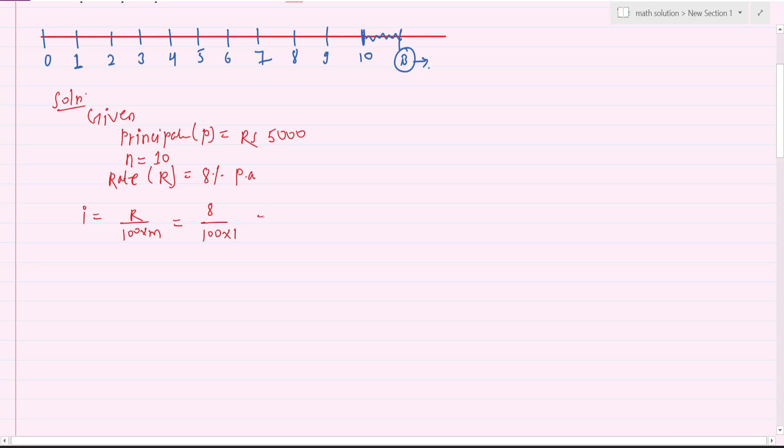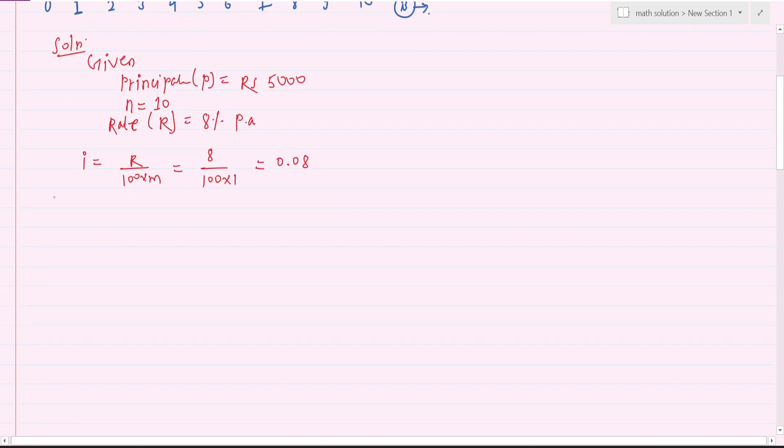Therefore i equals 0.08. Therefore, future value of regular annuity equals to P by i, 1 plus i to the power n minus 1. This is the formula.